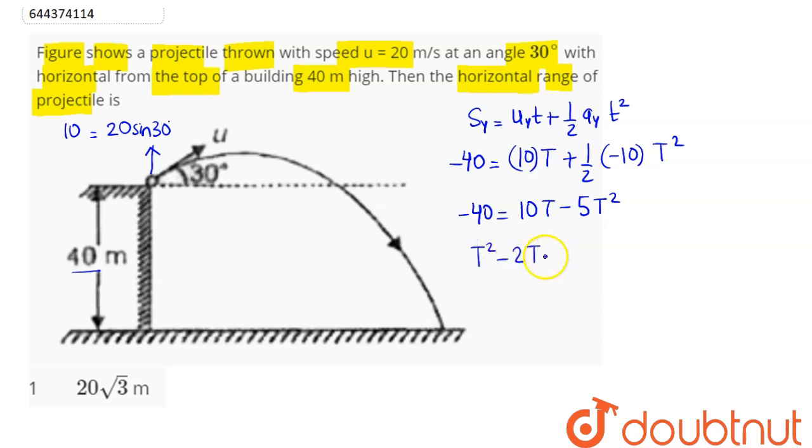square minus 2t minus 8 equals 0. This factorizes to t square minus 4t plus 2t minus 8 equals 0. We can say time of flight of the projectile is 4 seconds.